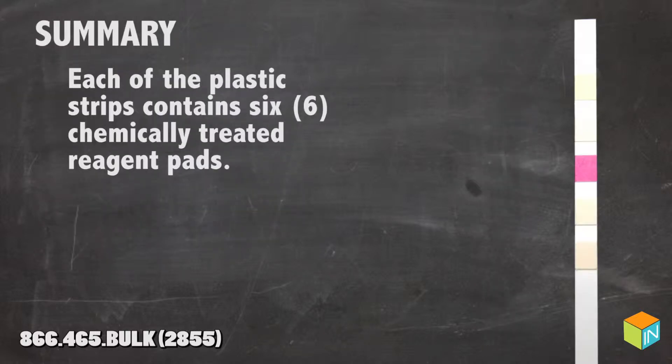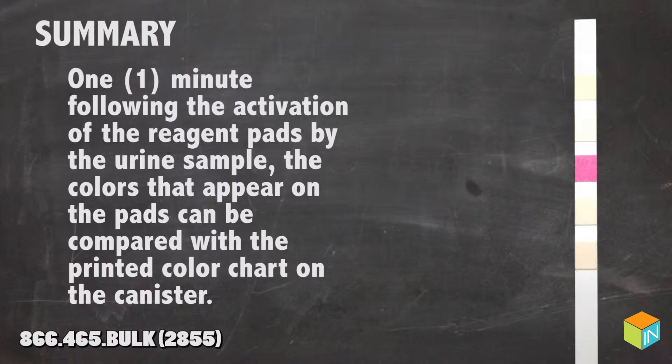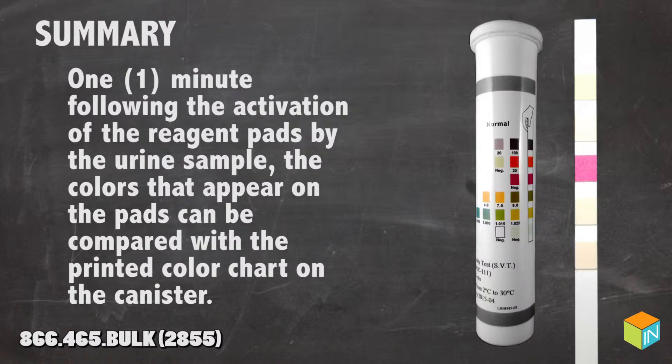Each of the plastic strips contains six chemically treated reagent pads. One minute following the activation of the reagent pads by the urine sample, the colors that appear on the pads can be compared with the printed color chart on the canister.